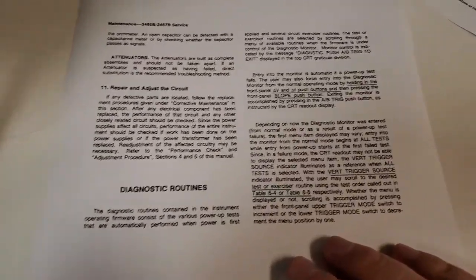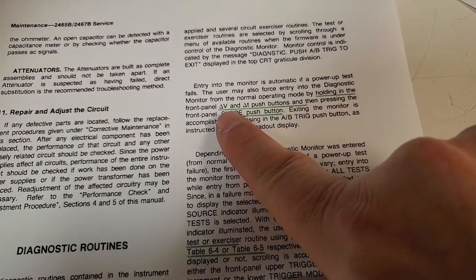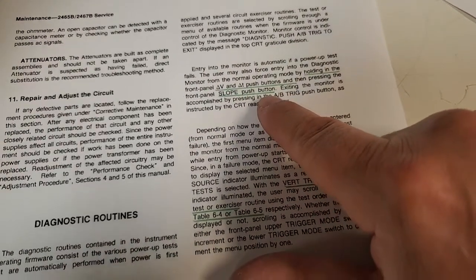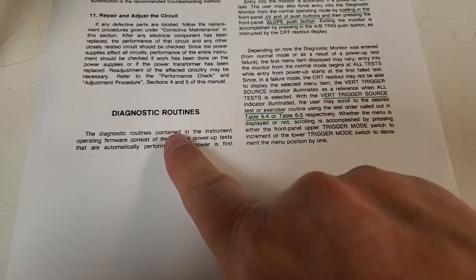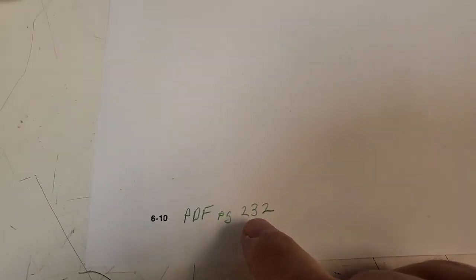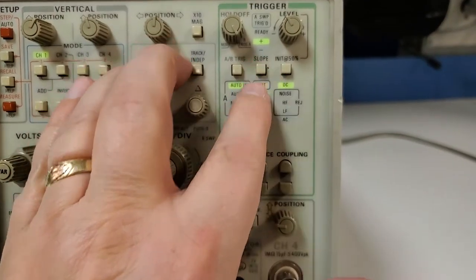You can find that information in the Tektronix service manual. You can go back and access it by pushing the delta V and the delta T and the slope pushbutton at the same time. That's how you get into the diagnostic tests. That's on page 6-test-in, or in the PDF page 232. So let's go ahead and do that. We're going to hold these two down and push this one right here.